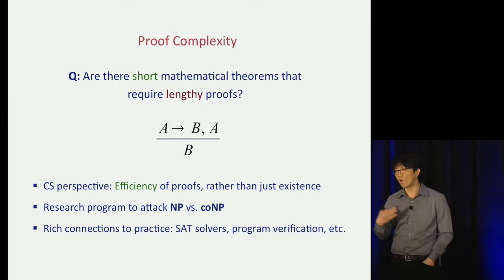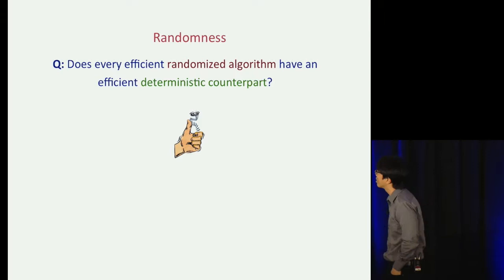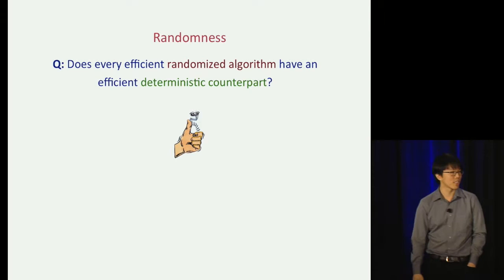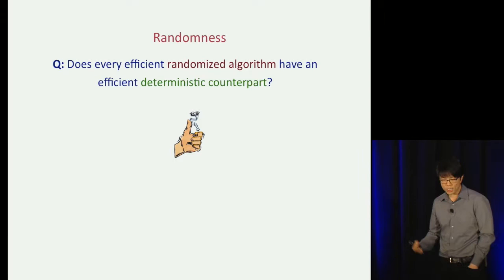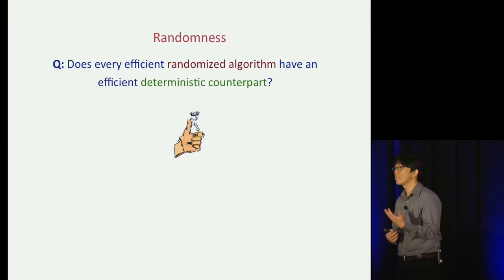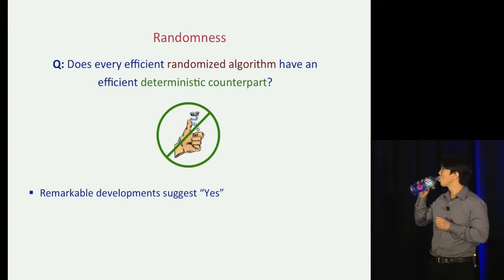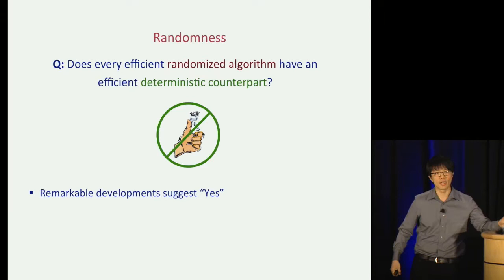The third question is about randomness in computing. Randomization is one of the most powerful ideas we have in computer science. Randomized algorithms are used in a variety of domains for a variety of purposes. The question here is: what is the true power of randomness as a computational resource? Is randomness truly essential to the efficiency of these randomized algorithms, or have we simply not yet discovered the correspondingly efficient deterministic algorithms? Could it be the case that every efficient randomized algorithm has an efficient deterministic counterpart? One of the major surprises of complexity theory is a research program that strongly suggests the answer is yes.